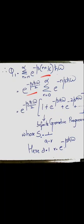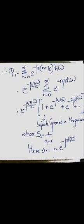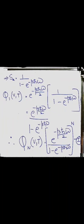Expanding the summation: when n=0 the term is 1, when n=1 it is e raised to minus beta h-bar omega, then e raised to minus 2 beta h-bar omega, plus e raised to minus 3 beta h-bar omega, and so on. This is an infinite geometric progression with first term a=1 and common ratio r = e raised to minus beta h-bar omega. The sum is 1/(1 minus e raised to minus beta h-bar omega). Therefore Q1(V,T) equals e raised to minus beta h-bar omega over 2, divided by (1 minus e raised to minus beta h-bar omega).